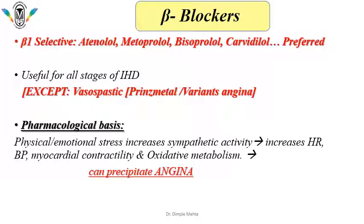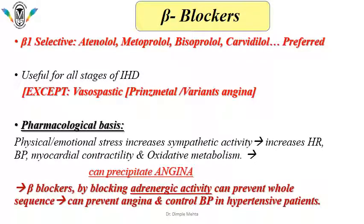Looking at the pharmacological basis of beta blockers: any physical or emotional stress that increases sympathetic activity will increase heart rate, blood pressure, myocardial contractility, and oxidative metabolism. In nutshell, these activities can precipitate angina. So the root cause of angina can be considered as increased sympathomimetic activity. Beta blockers, by blocking adrenergic activity, can prevent the whole cascade and can prevent angina and control blood pressure in hypertensive patients.